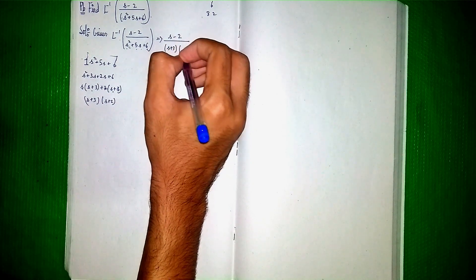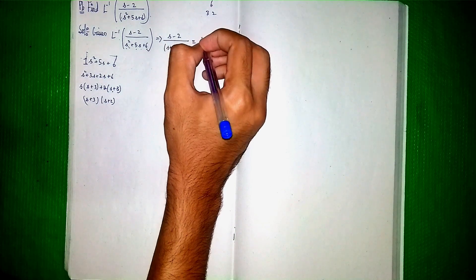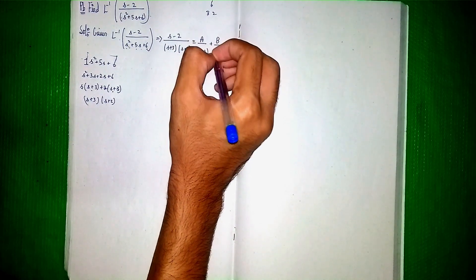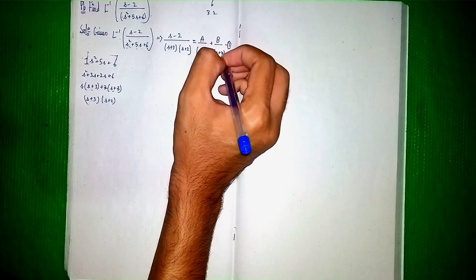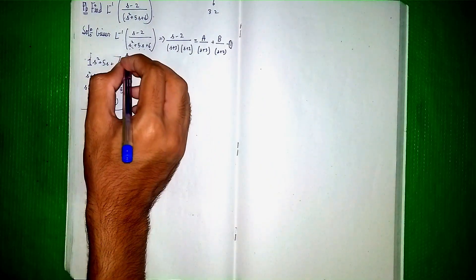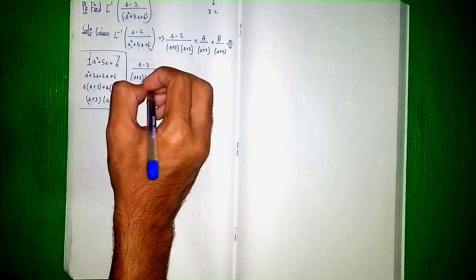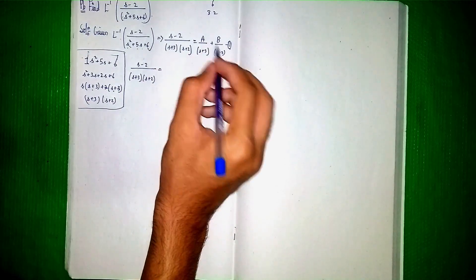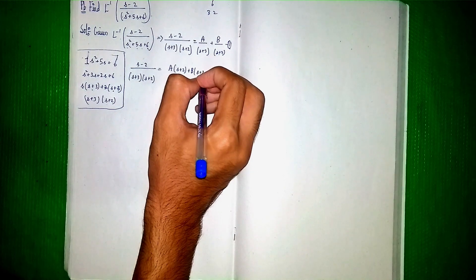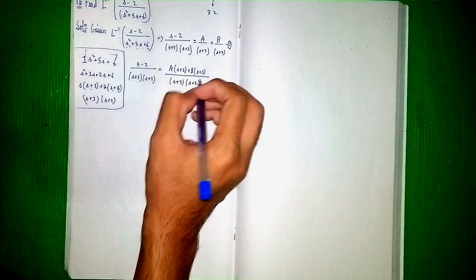In the partial fraction method, we write (s minus 2) divided by (s plus 3)(s plus 2) equals A by (s plus 3) plus B by (s plus 2). Call this equation 1. Now cross-multiplying: the right side becomes A(s plus 2) plus B(s plus 3), all over (s plus 3)(s plus 2).